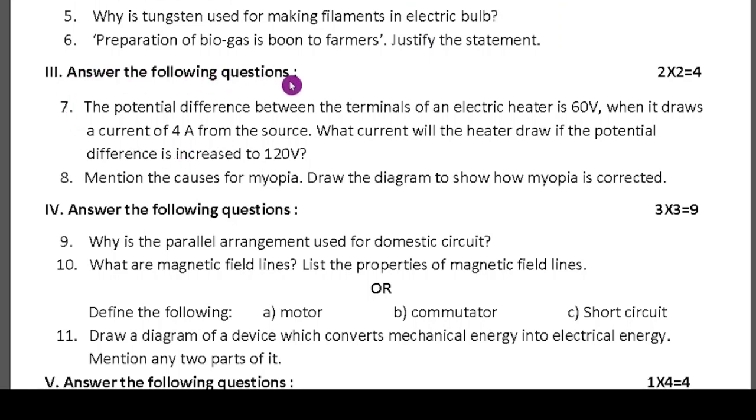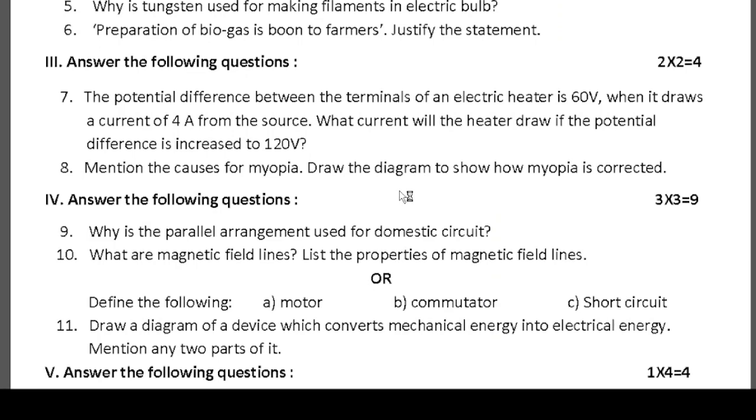Third main, answer the following questions. Two questions will be there, each question carries two marks. One question is you have to solve the problem, very easy to solve. I have already explained how to solve problems also, that link I have given if you want. Here: mention the causes of myopia, draw the diagram to show how myopia is corrected. That is also very easy.